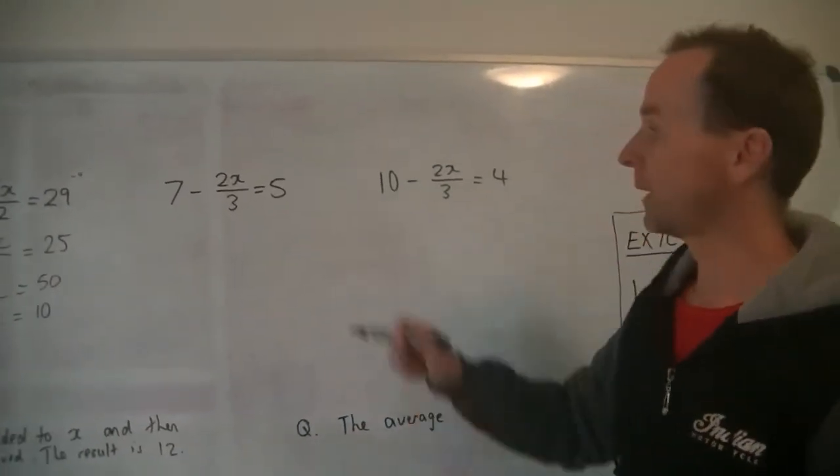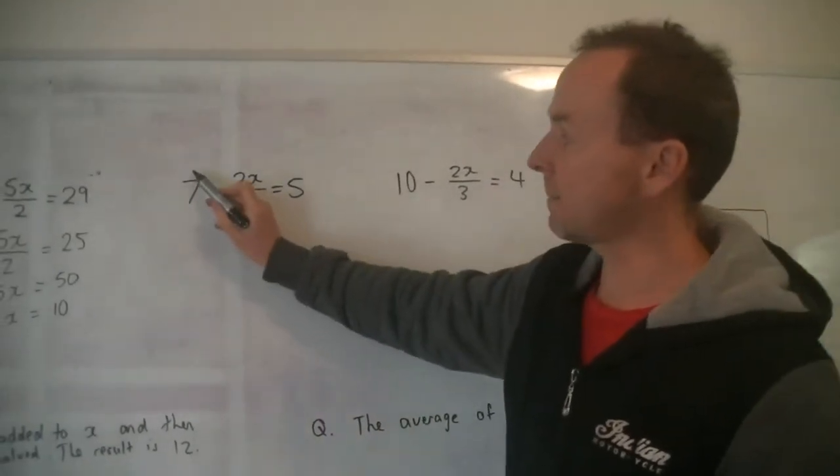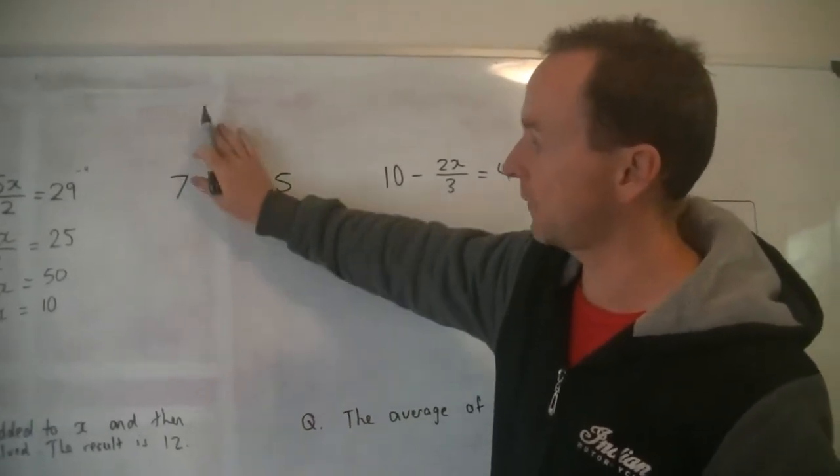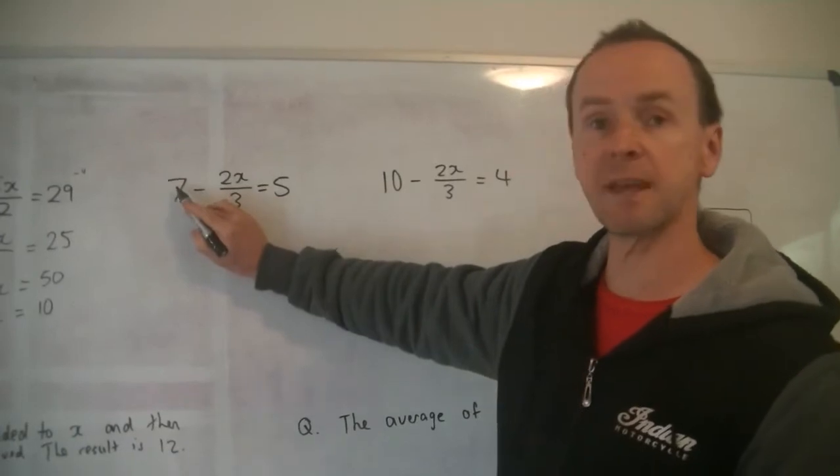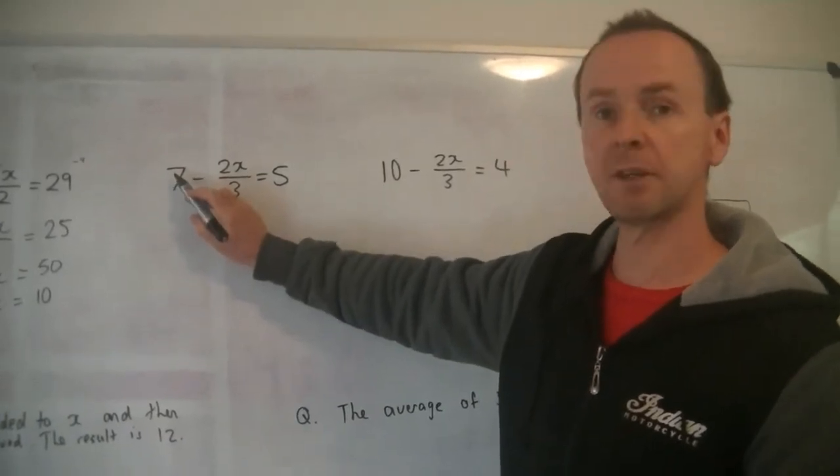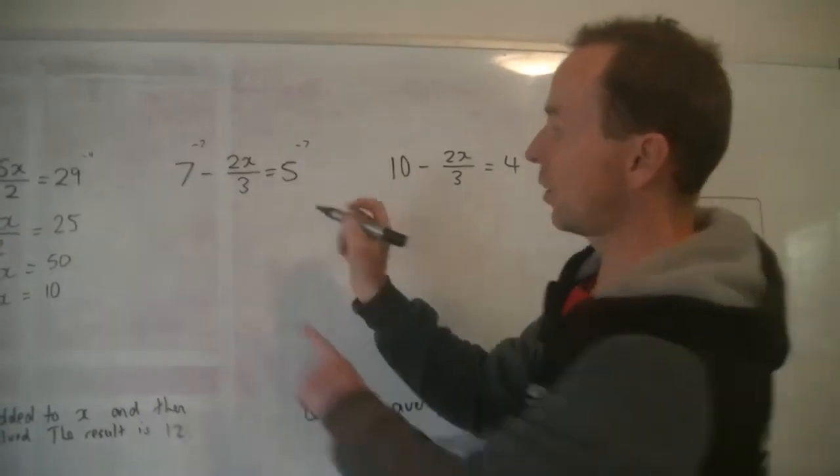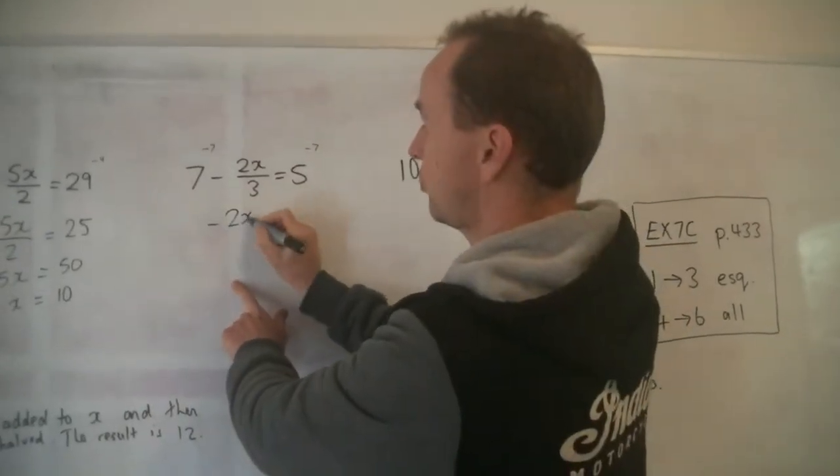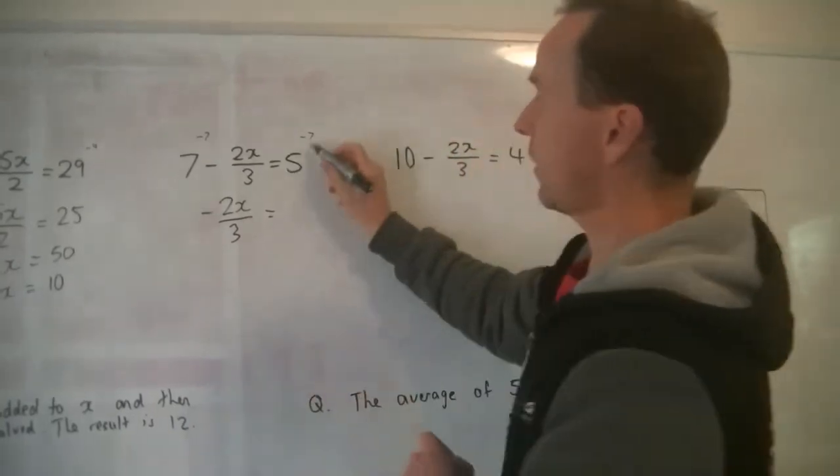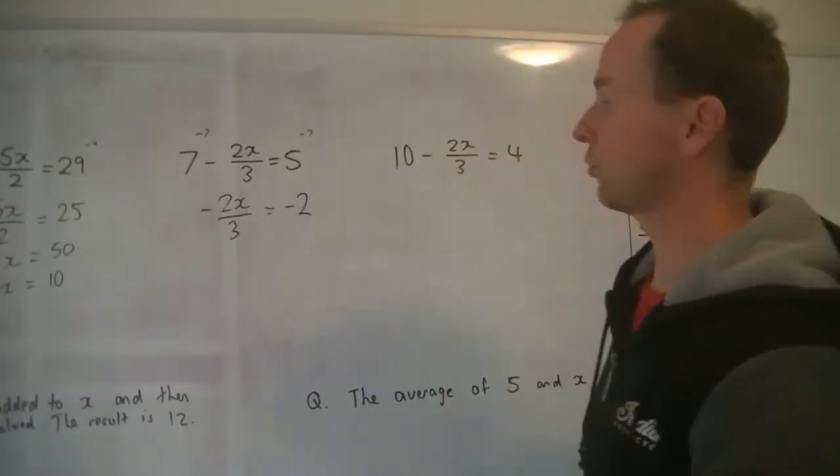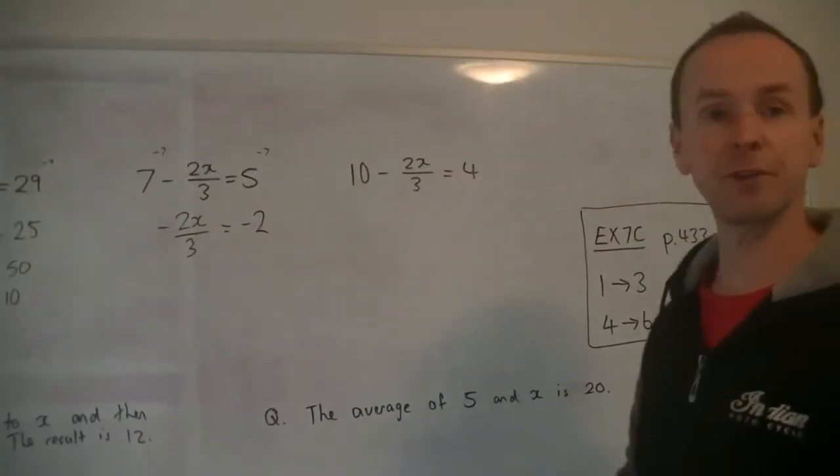Alright, now this is a bit of a trickier one because we've got a negative there. But remember, this number here is still, if I cover that up, it's still a plus 7. How do I get rid of plus 7? I'm minus 7 to both sides. Alright, so now I've got minus 2x over 3 is equal to 5 minus 7, which is minus 2. So that's our first step.